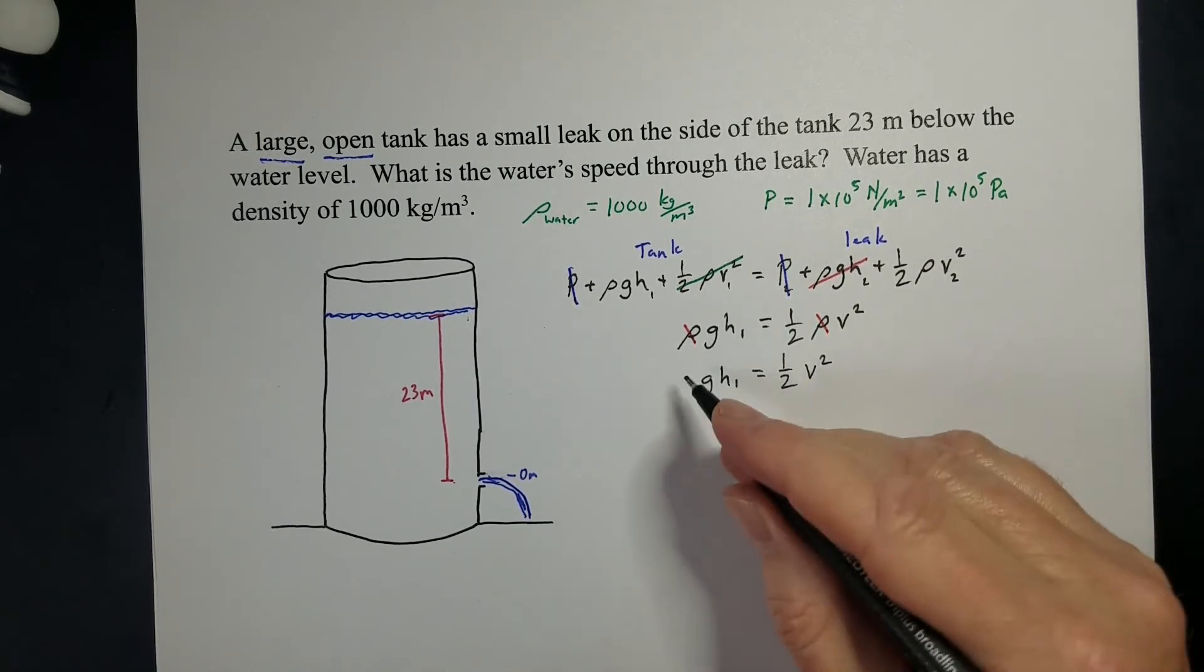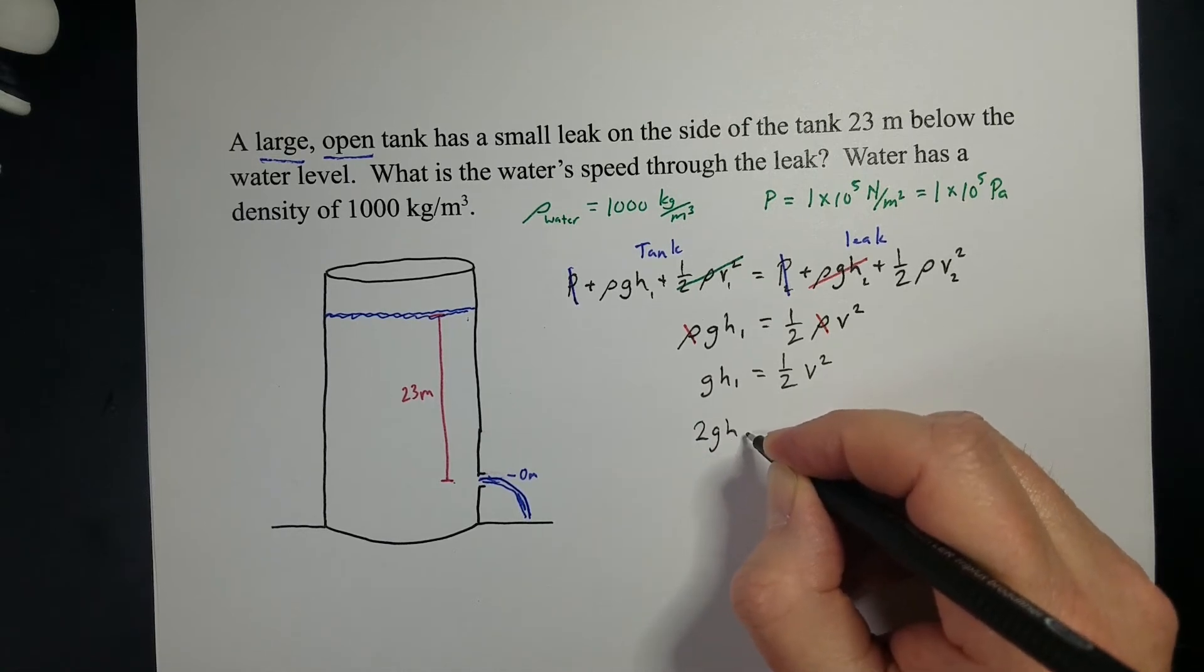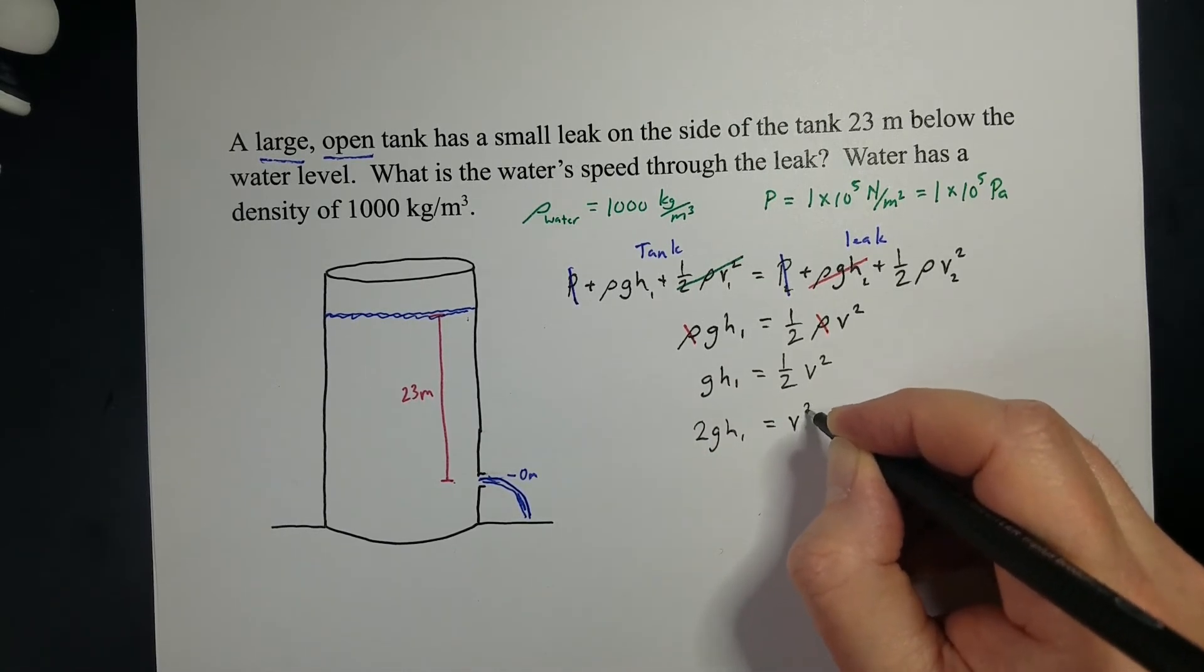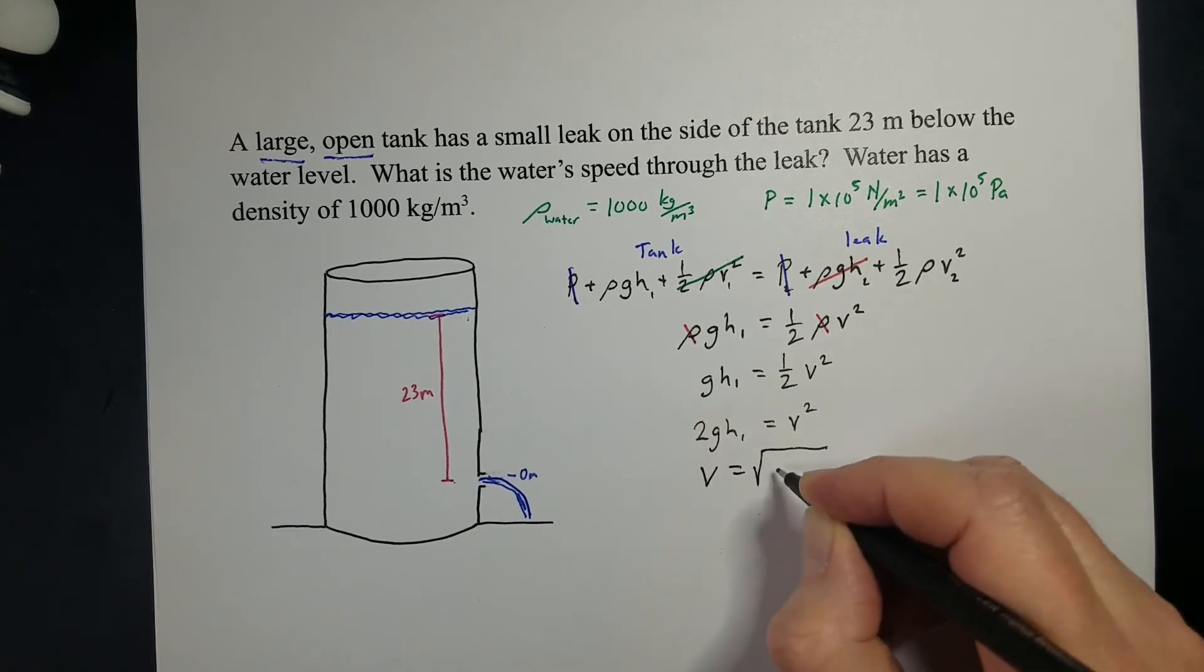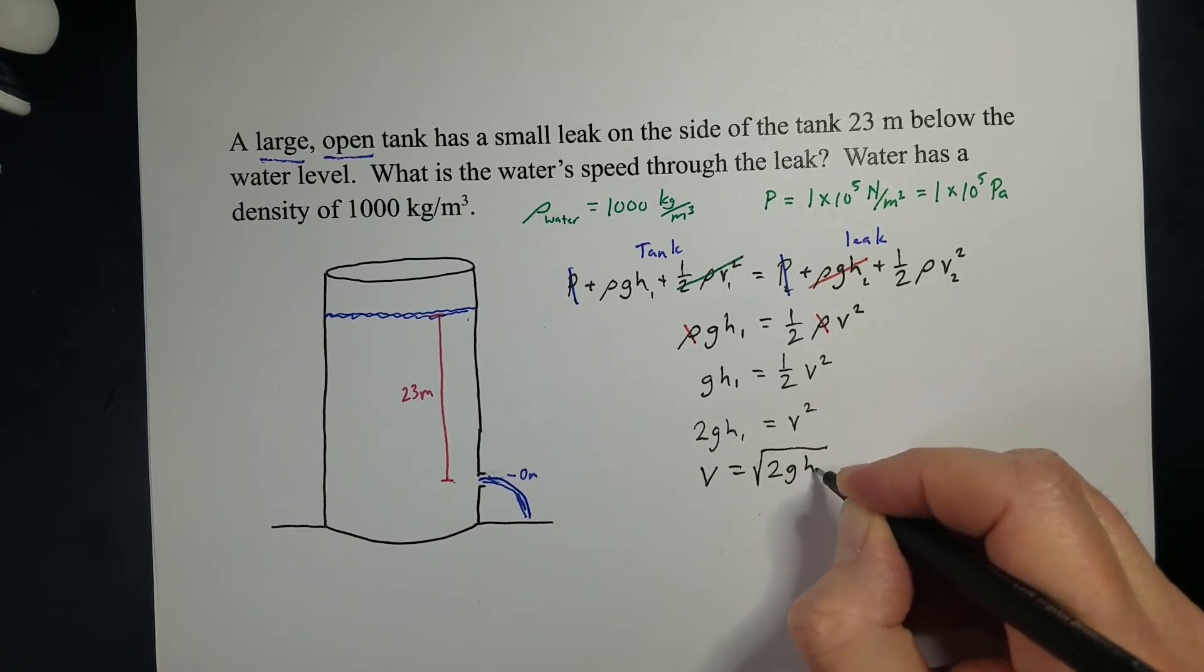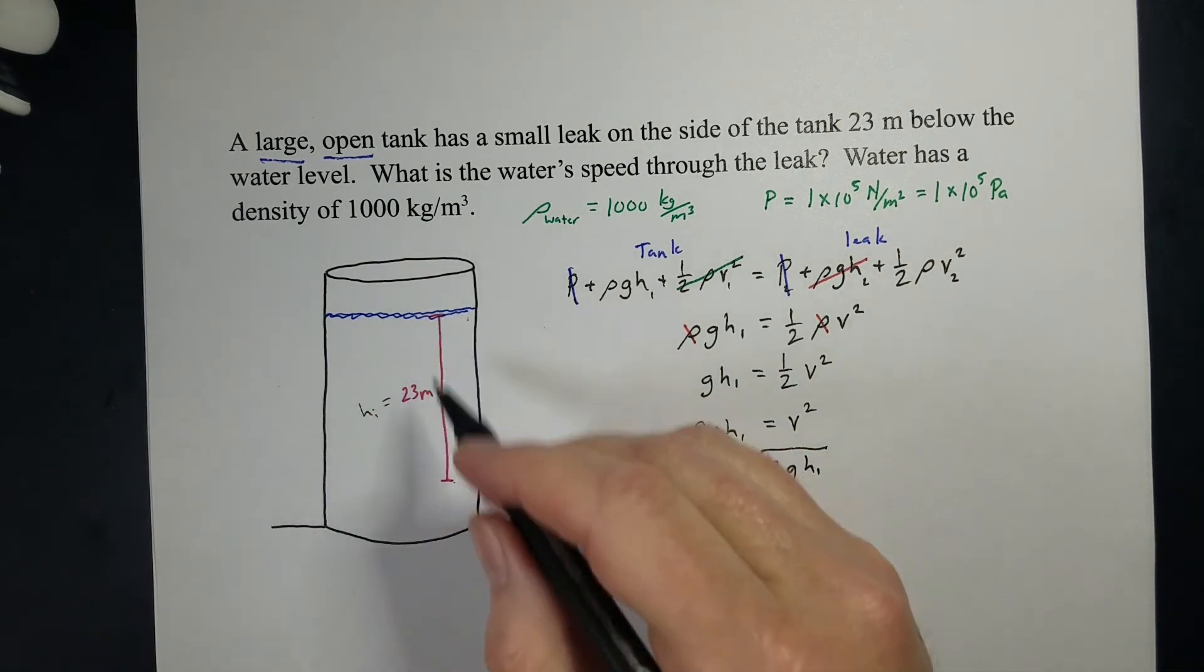GH1 equals 1 half V squared. And I want to solve for V, so I'll move the 2 over. 2 GH1 equals V squared. Take the square root of 2 GH1. And H1 is where our water level is.